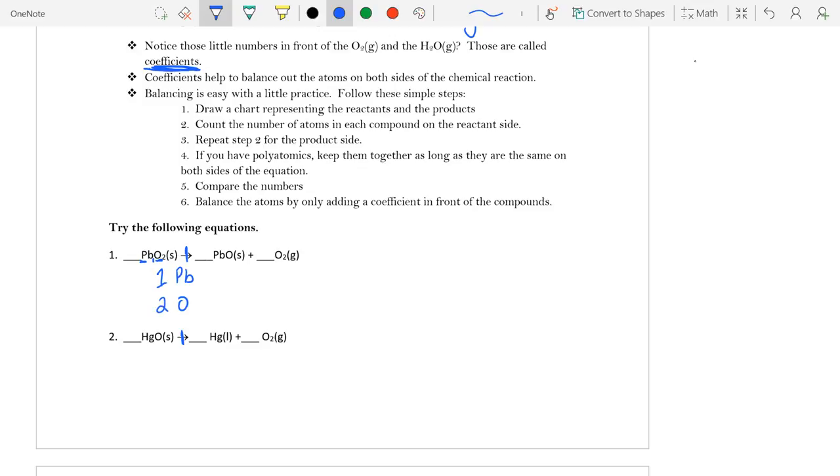I have two oxygens. And on the right side, I have one lead atom. And I have two oxygens here and one oxygen there. So when we add them together, we get a total of three oxygens.